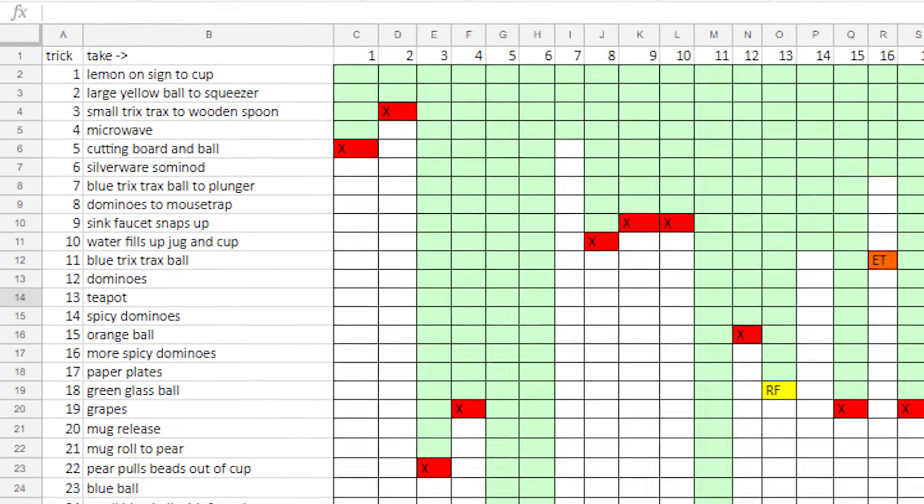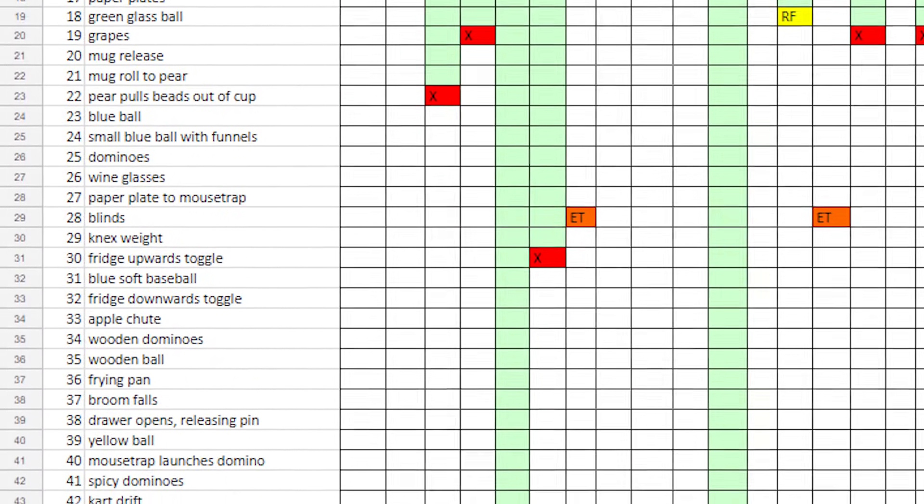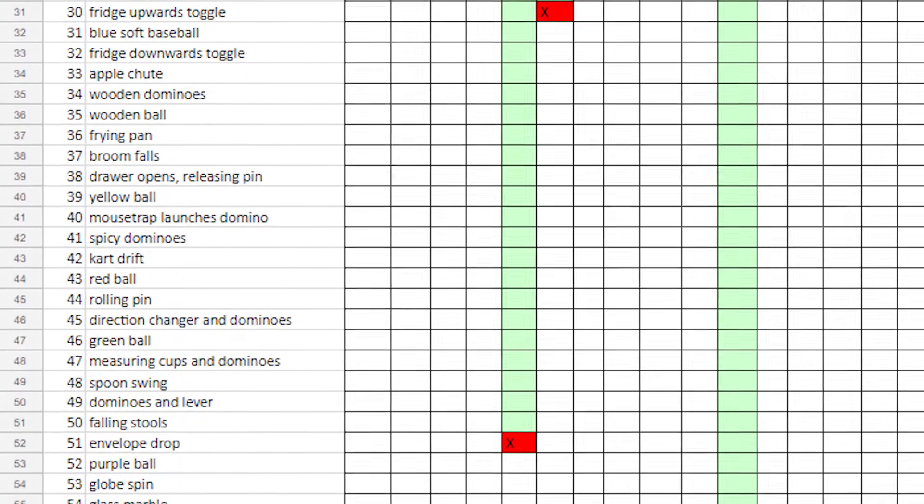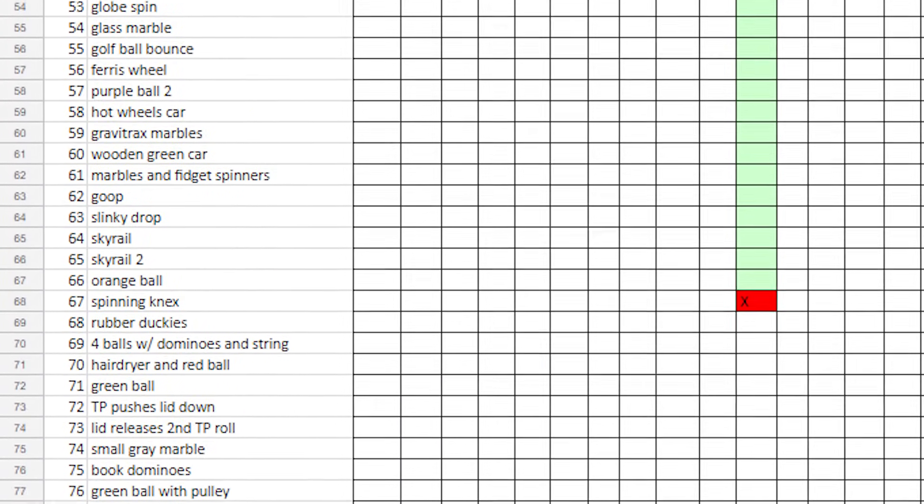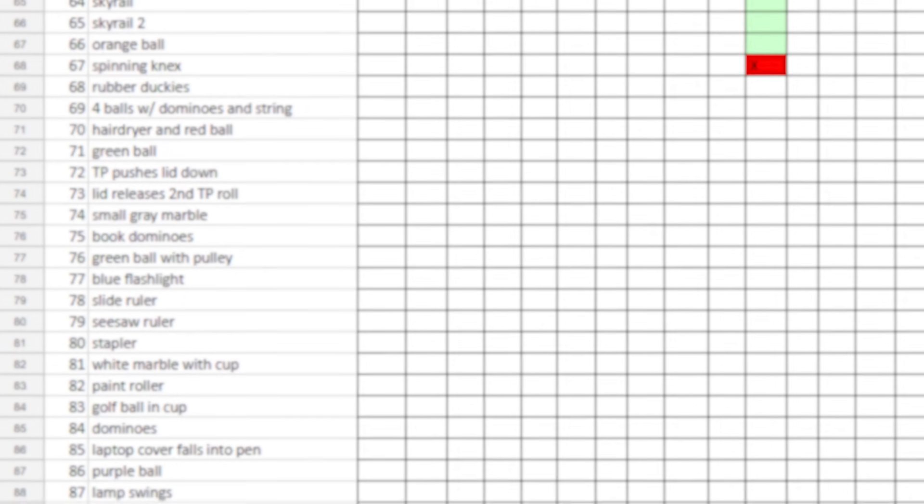I kept track of the successes and fails of each individual part of the machine and 76 out of the 117 steps worked every time they ran on filming day. However, 41 of the steps did not work every time. In fact, the average reliability of each step was 94% which doesn't sound that bad but when each step fails on average